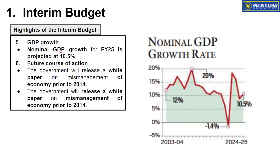The nominal GDP growth will be 10.5%. Nominal GDP means GDP at current year prices. In the pandemic year, nominal GDP growth went into negative — real GDP declined by 12-13% and nominal GDP declined by minus 1.4%, because prices were high at current year levels but production was quite low. Since then nominal GDP has peaked up, mainly because of the base effect from the very low pandemic year of 2020-21.